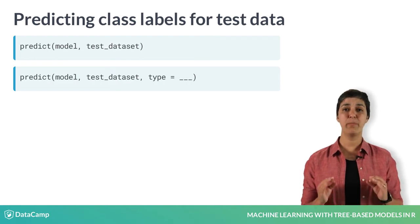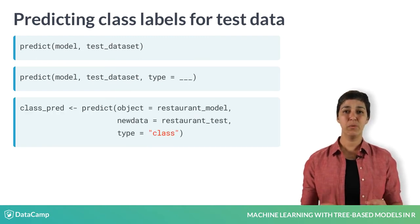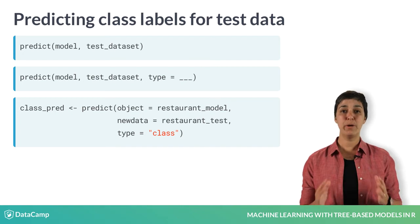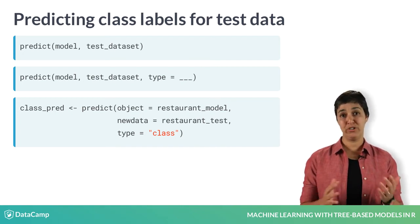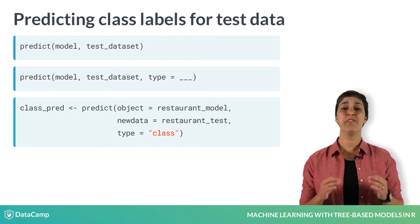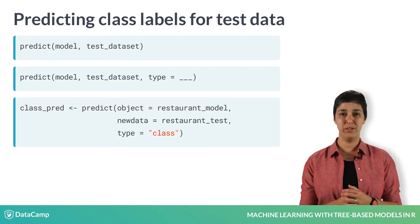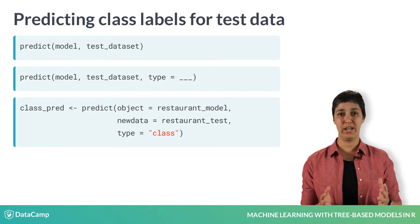In classification problems, the model generates a raw predicted value for each class. In most cases, you can think of these predicted values as the probability that the example belongs to each class. When type equals class, the function will return a predicted class label. And when type equals prob, a matrix of raw predicted values is returned instead, with one column for each class.